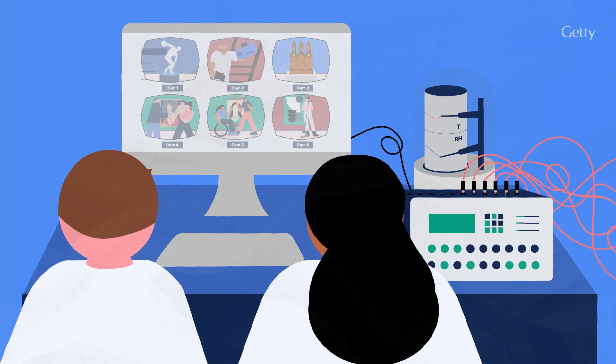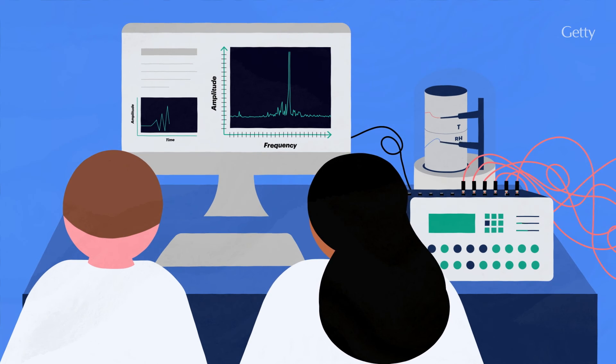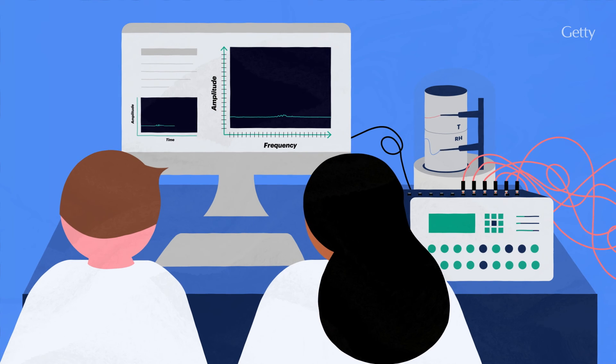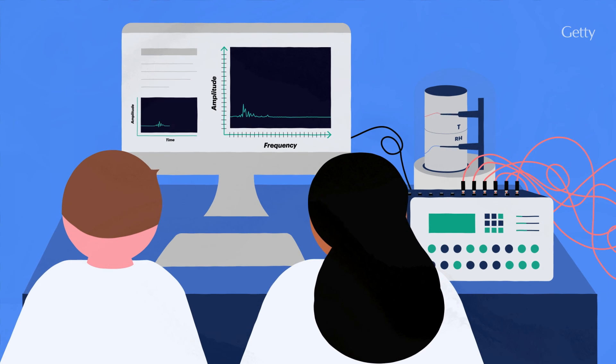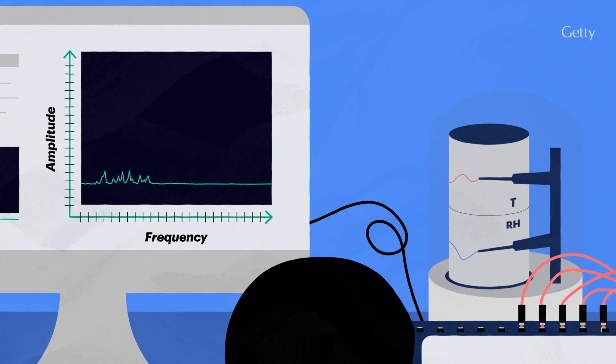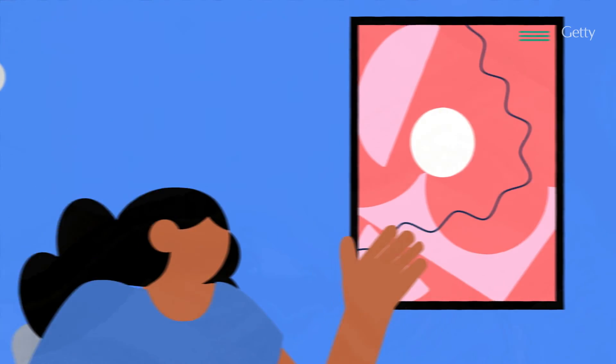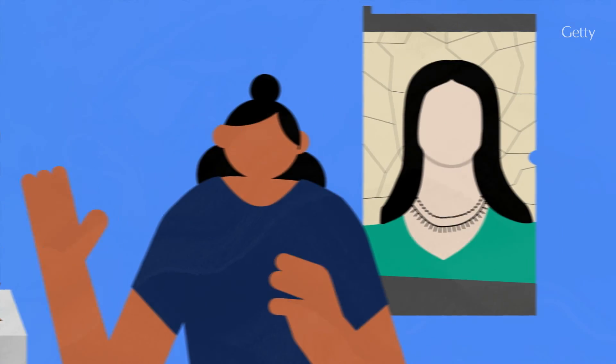AE gives us a powerful way to monitor cultural heritage objects. Its precision and sensitivity in detecting potential damage work as a safety net, enabling the development of more sustainable environmental management strategies. The result? Greater access to objects here and now, all while preserving our cultural heritage for generations to come.